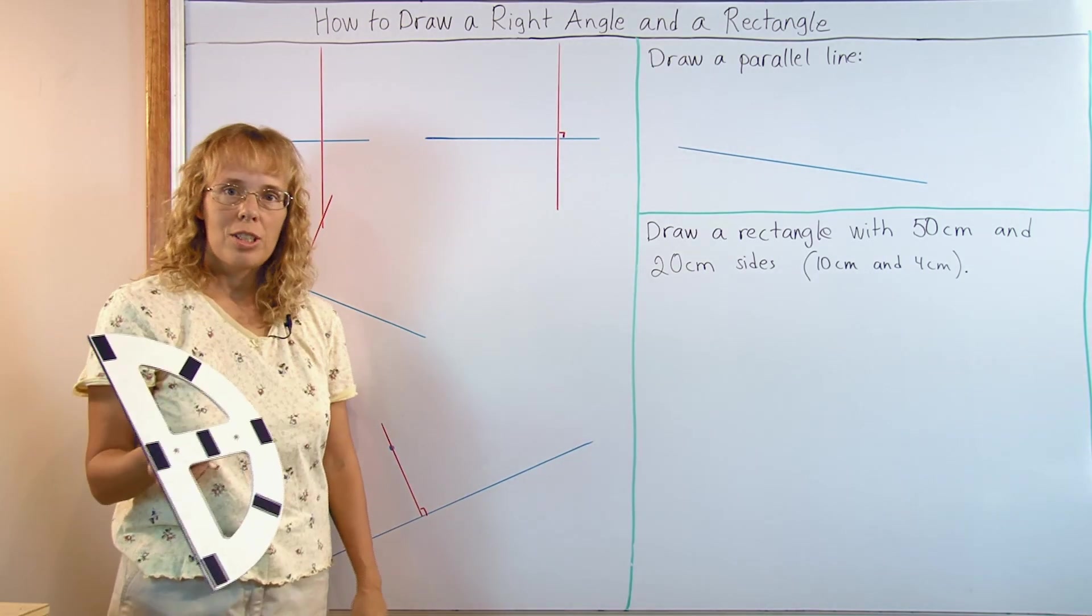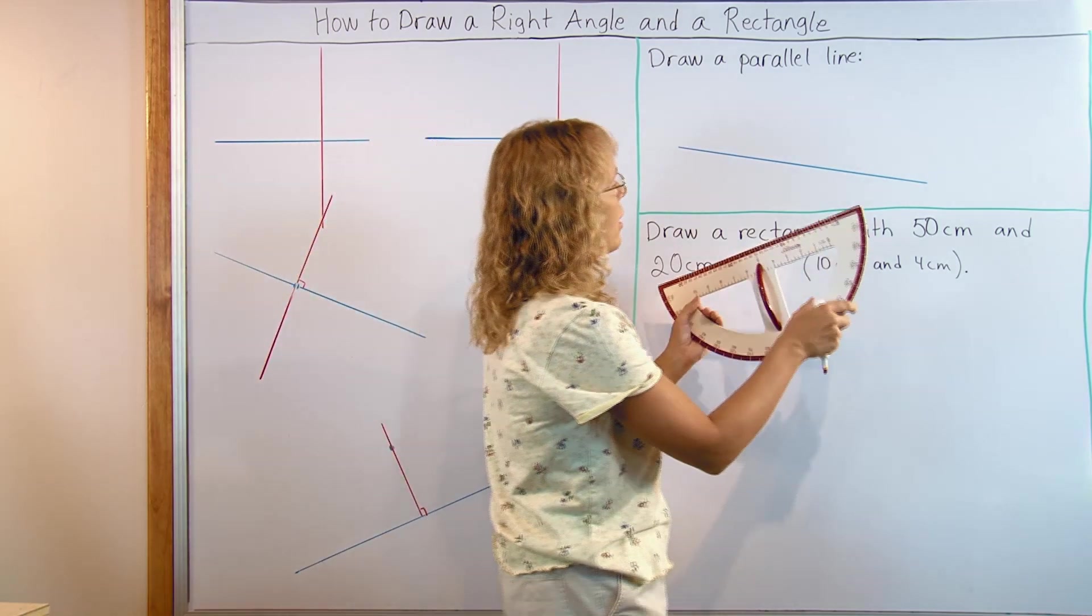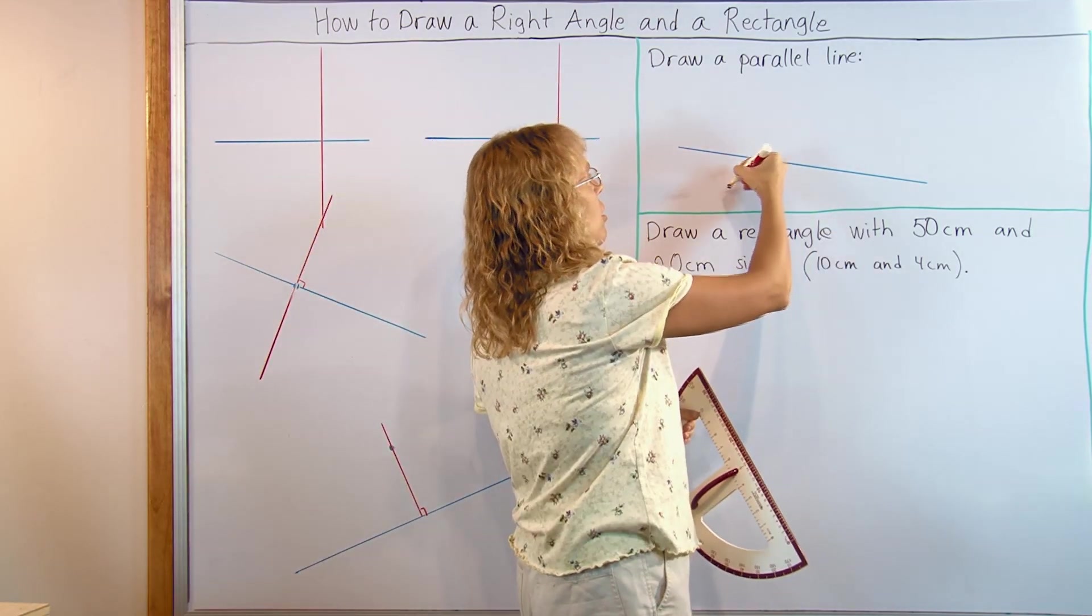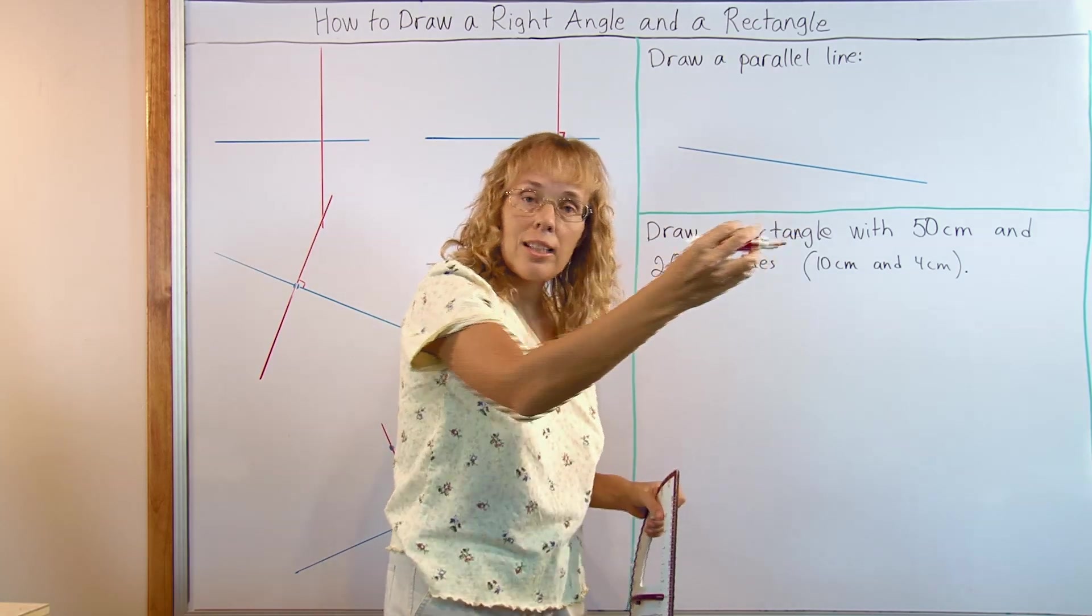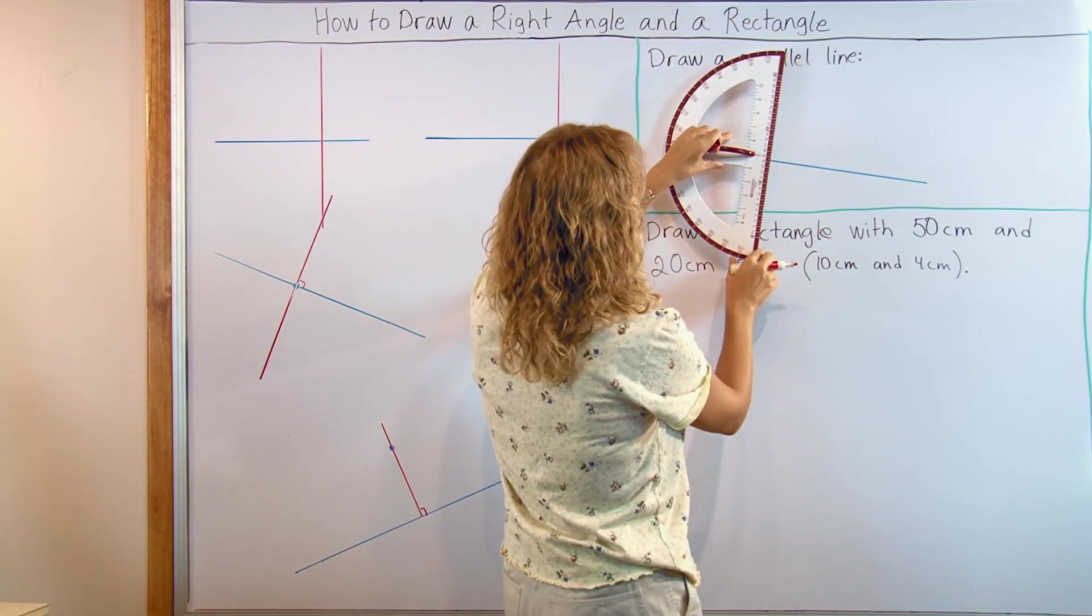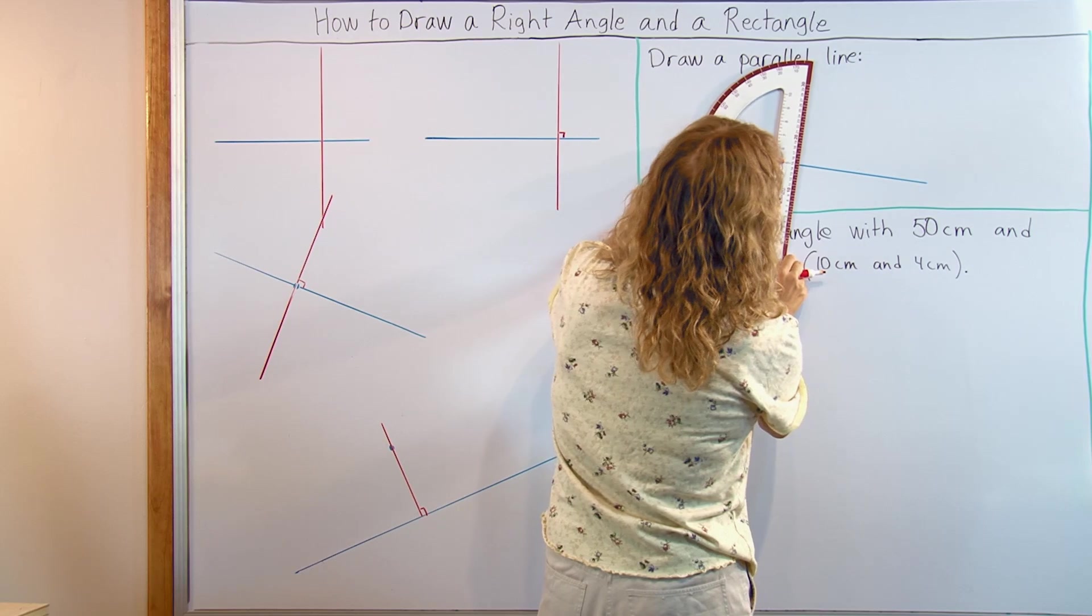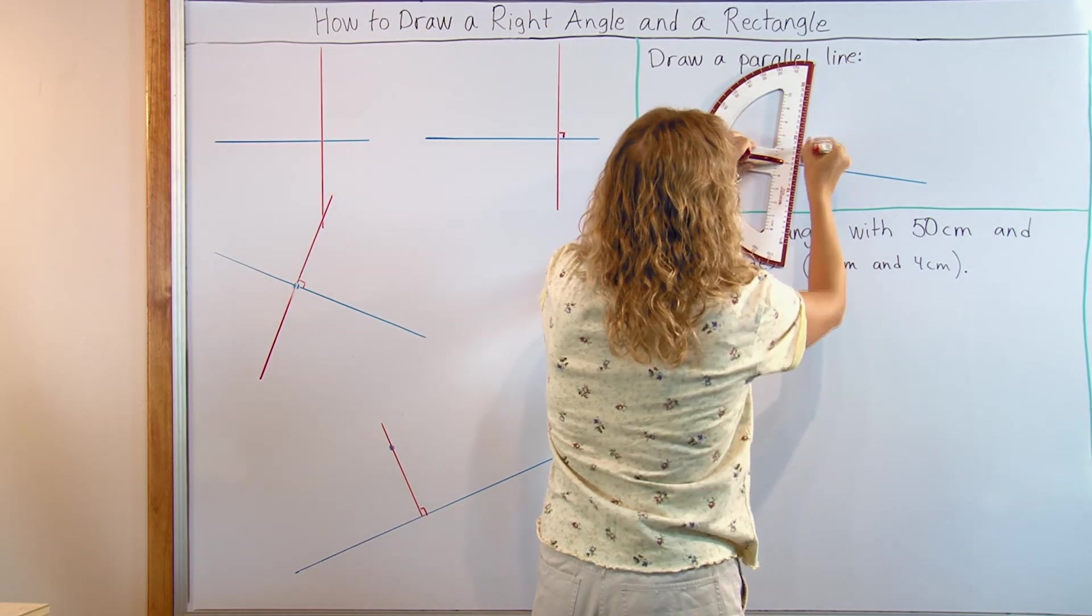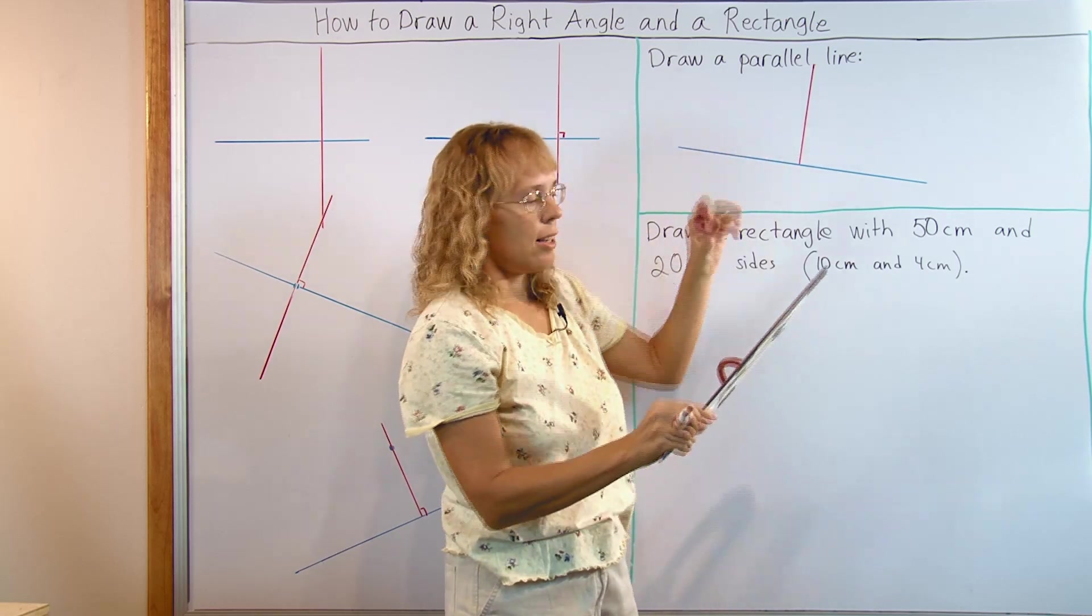Now you can also use this method to draw a parallel line. Let's see how that goes about. I would first draw a line that is perpendicular, a line that is at the right angle. Then another line that is at the right angle with my first line. First I will draw just any line that is at the right angle using the same method here.